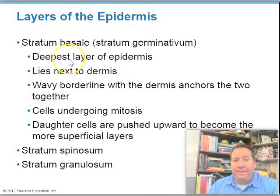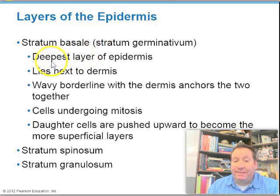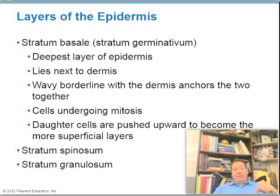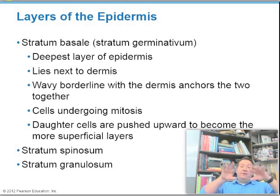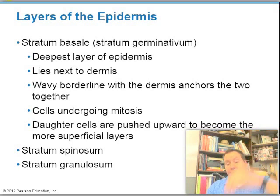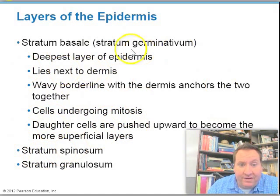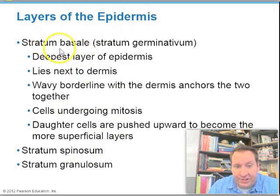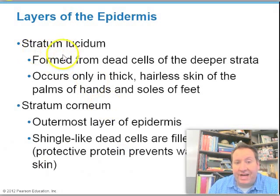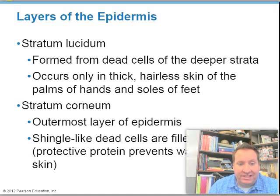The epidermis is composed of different layers called strata. The bottom layer is the stratum basale — the deep layer lying next to the dermis with a wavy border to anchor the two together. In the basal layer, cells undergo mitosis and divide; as they push upward, they produce keratin and become waterproof, dying as they rise. After the basale comes the stratum spinosum, then the stratum granulosum, then the stratum lucidum — a layer only found in thick skin like the soles of your feet or palms of your hands.